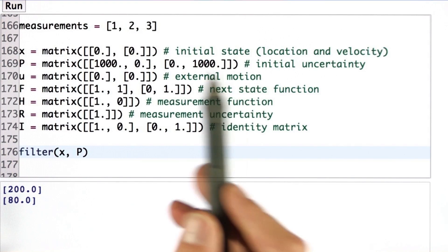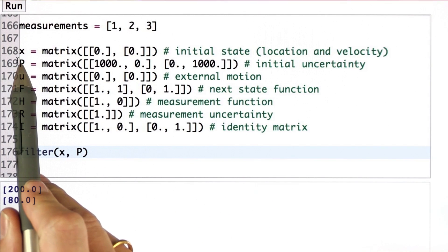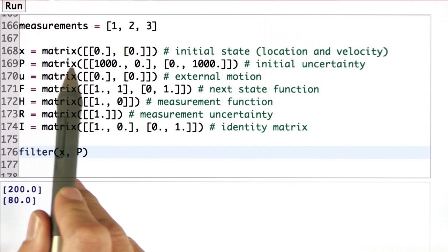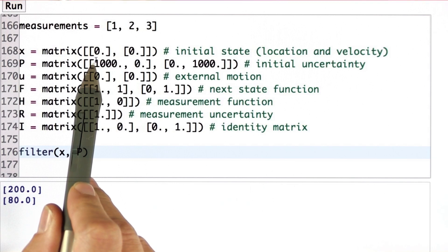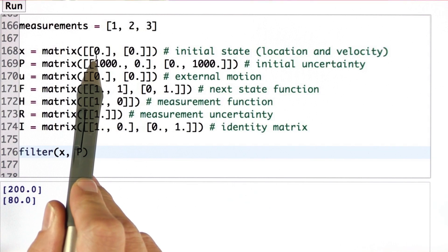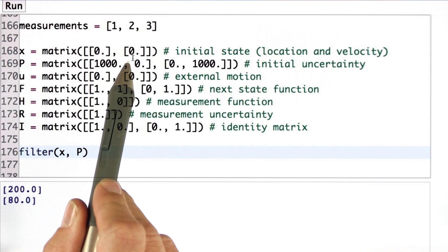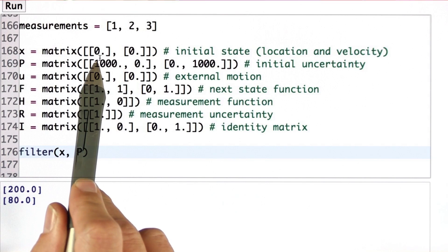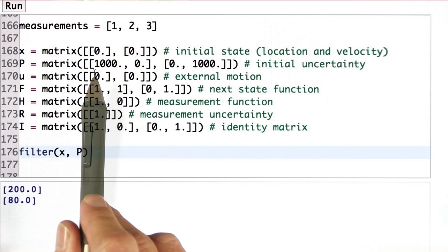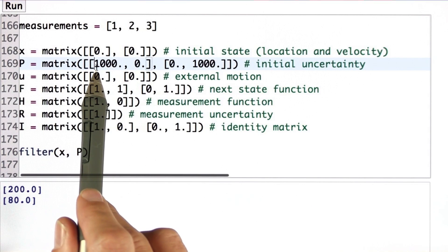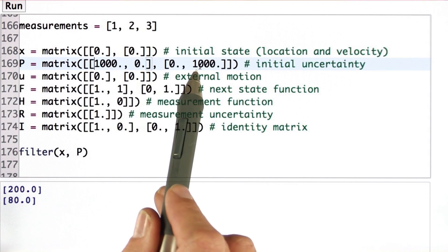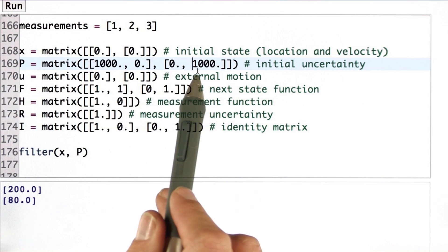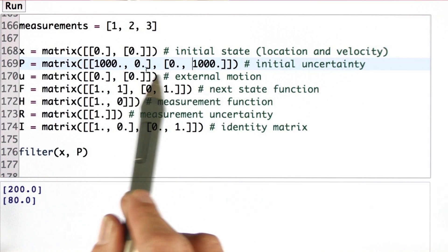So using my matrix libraries, I set an initial state. This is a tracking in 1D where the state is the position and the velocity. I initialize both with zero because I don't know the actual location and velocity. I give an uncertainty matrix where I have really high uncertainty in the position and velocity. And they're both uncorrelated. That's the matrix of 1000, 0, 0, 1000.